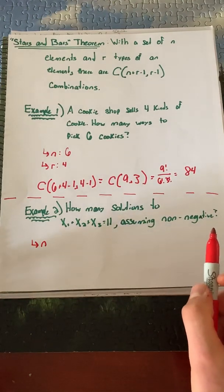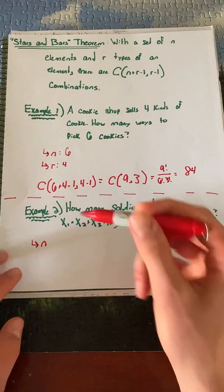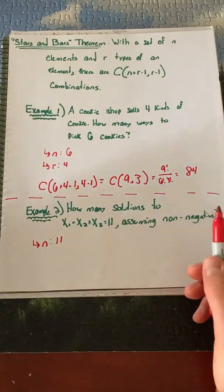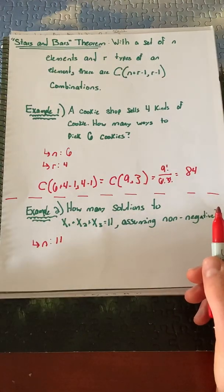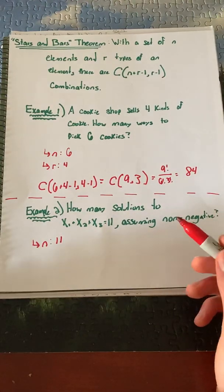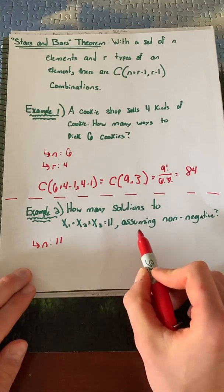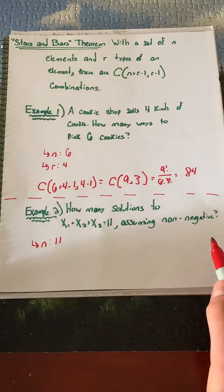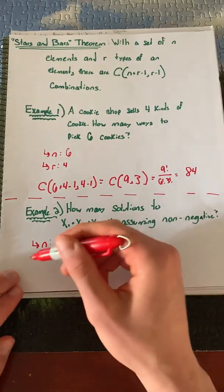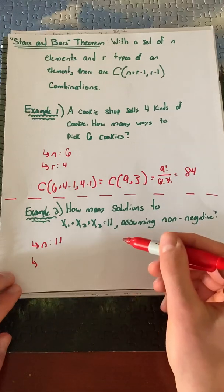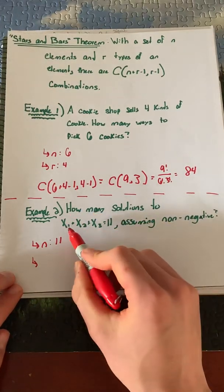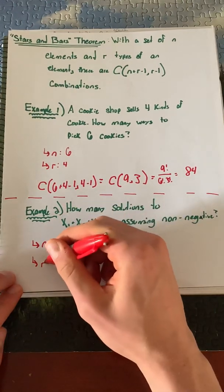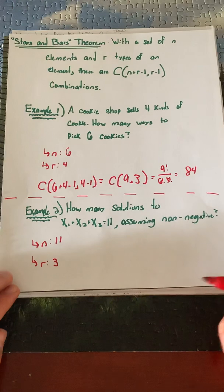Let's find our n, where n is how many elements we have. This can be tricky to see, but if we're adding up to 11, we have 11 elements for each digit from 0 to 11. If we have a digit greater than 11, like 12, this equation won't work because there's no way to make 12 plus other numbers equal 11. Our r is how many types of elements we have. We have three variables, and each variable will be assigned a digit, so r equals 3.